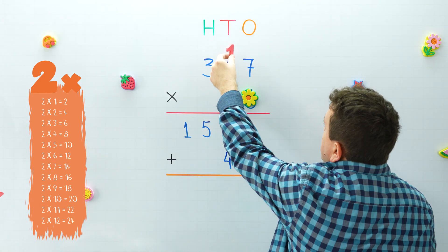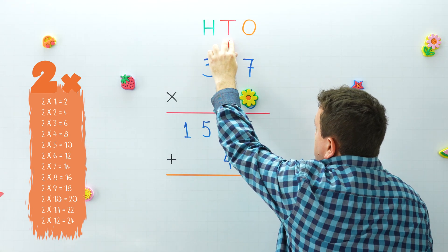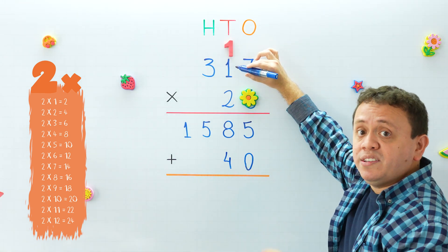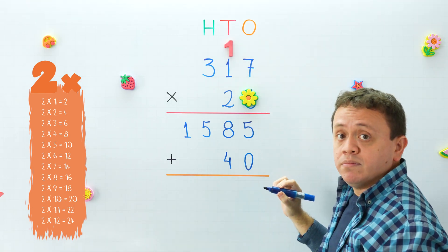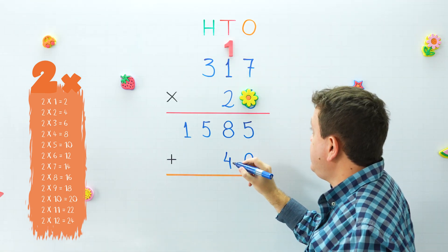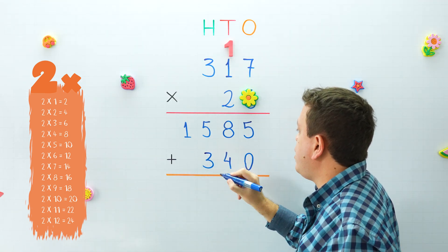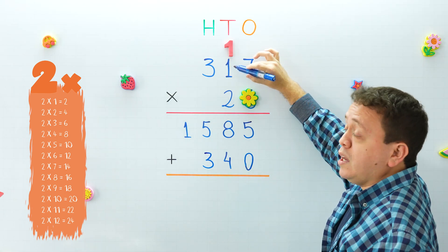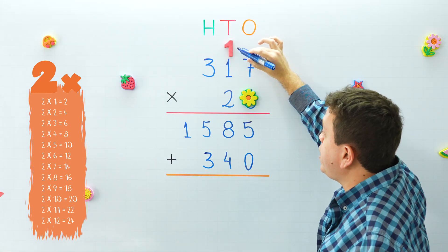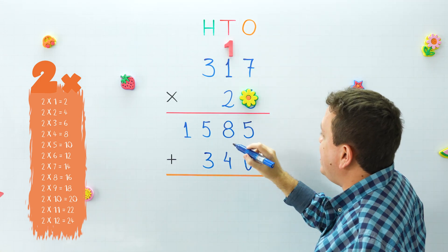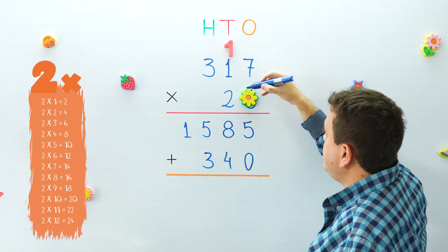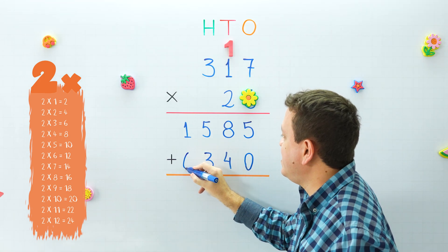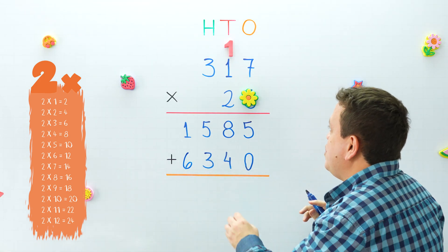We put the four here and carry the one to the next column. Two times one equals two, plus one that we carry gives us three. Finally, two times three equals six. We finish with the second step.